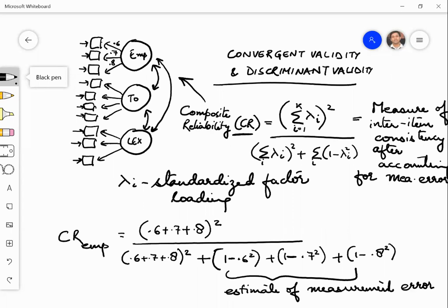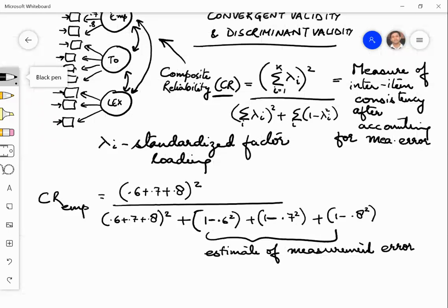Lambda is the loading, so 1 minus lambda square is the estimate of the measurement error. And this number, just like Cronbach's alpha, composite reliability should also come out to be greater than 0.7.